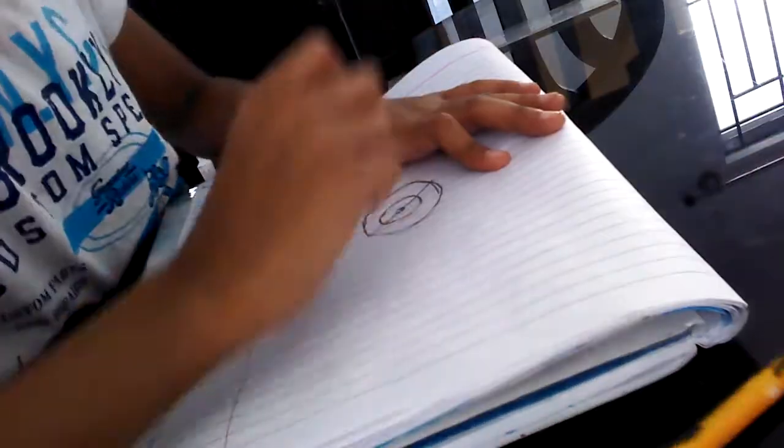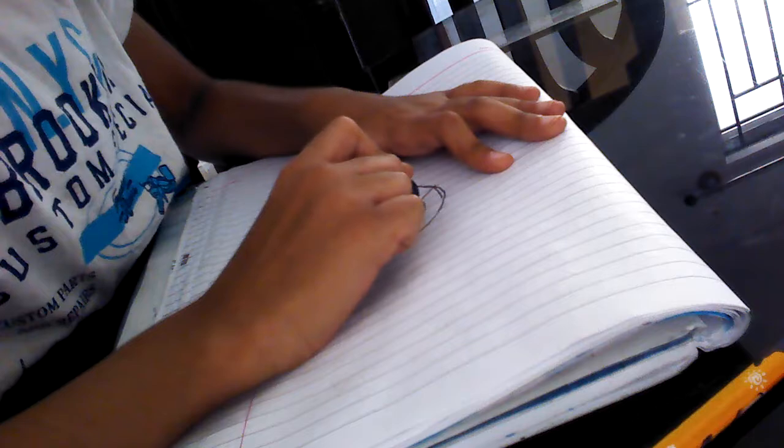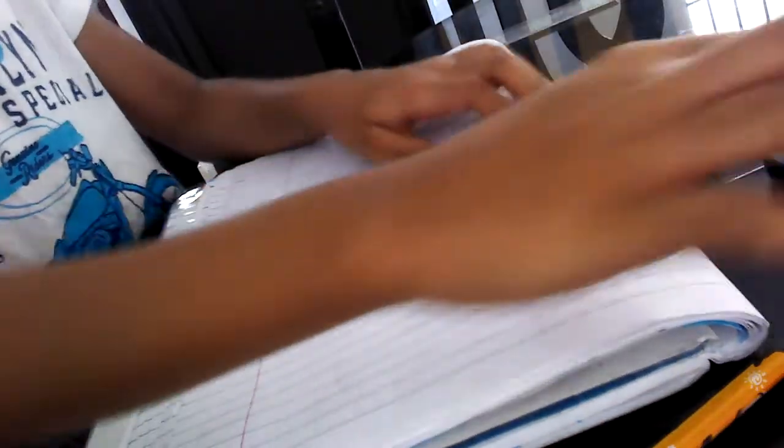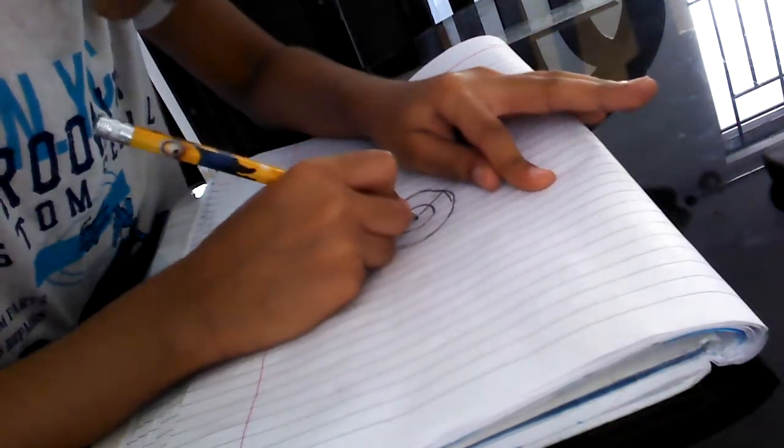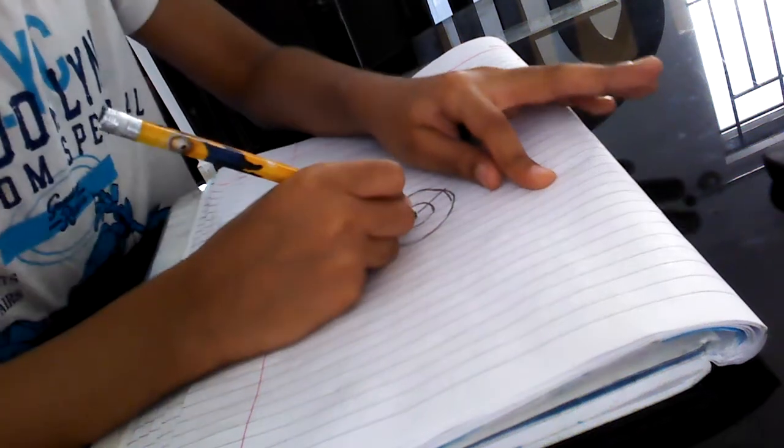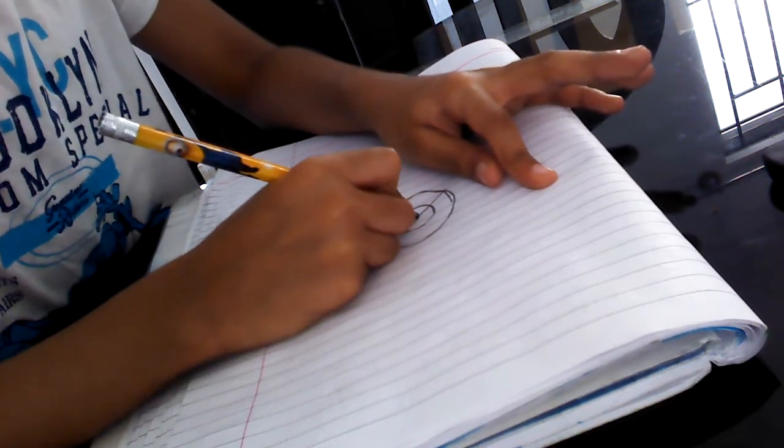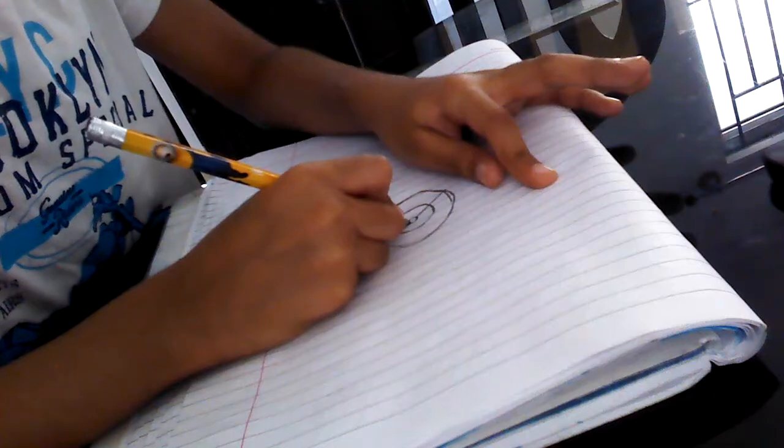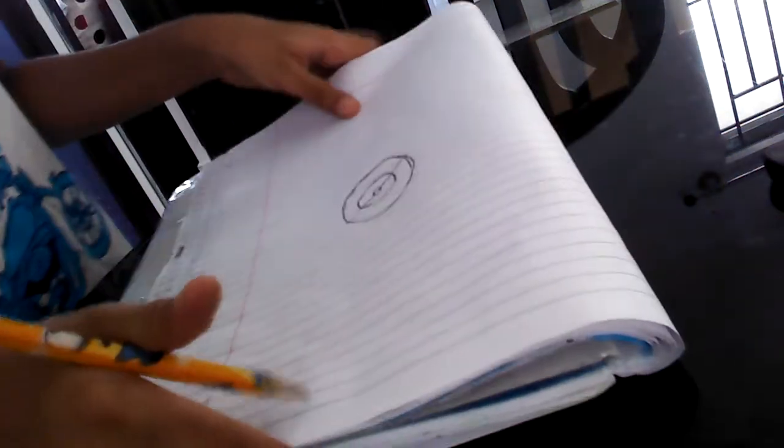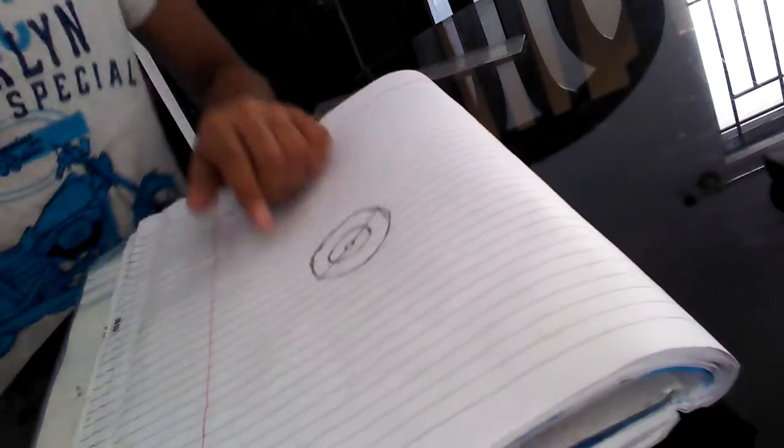But, there is one more thing. Erase this. Erase this. Erase this. Small dot. And, again draw it. Now, put the line like this. See. It should not happen. It should not go cross out of the line. It should look like this. Now, make same to same like that. Cross.